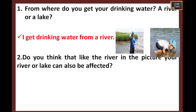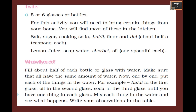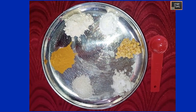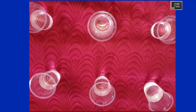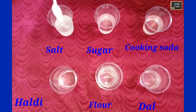From where do you get drinking water — a river or a lake? You can write where you get drinking water. Do you think your river or lake can also be affected like the river in the picture? Yes, it might be affected. Next, we are going to try an experiment. Take five or six glasses or bottles. Also take the items: salt, sugar, cooking soda, haldi, flour, and dal. We will also be taking lemon juice, soap water, sherbet, and oil. Fill about half of each bottle or glass with water, making sure all have the same amount.